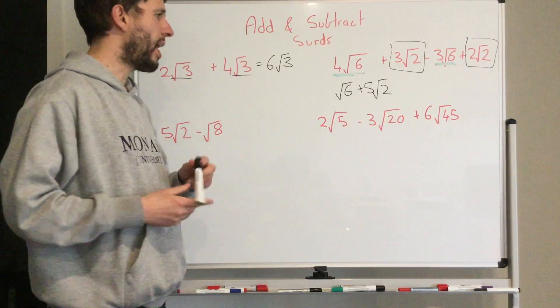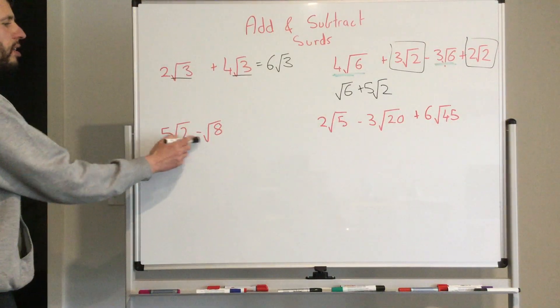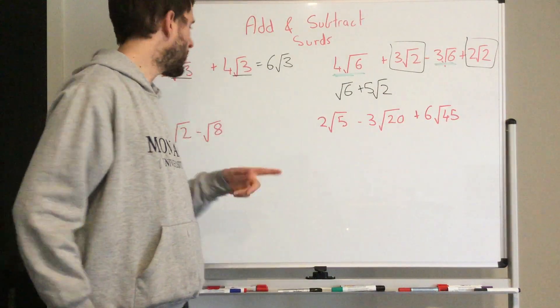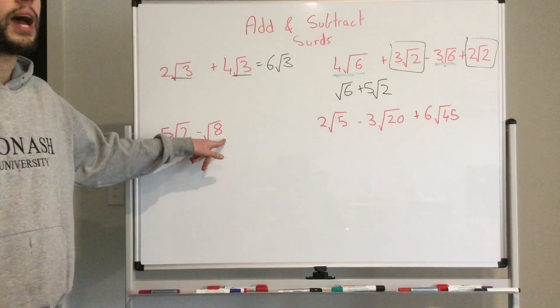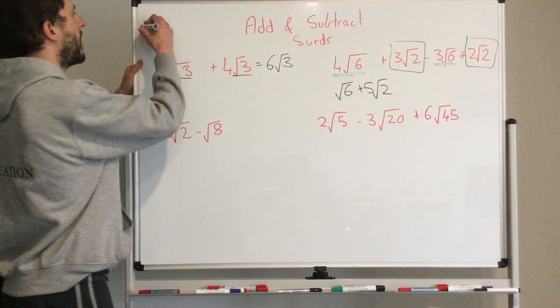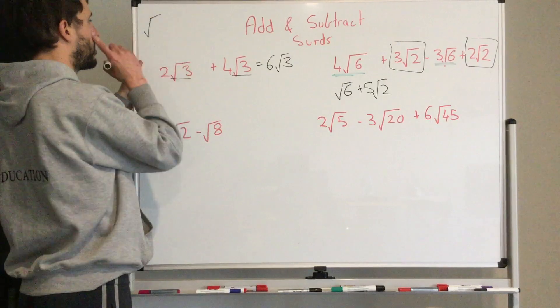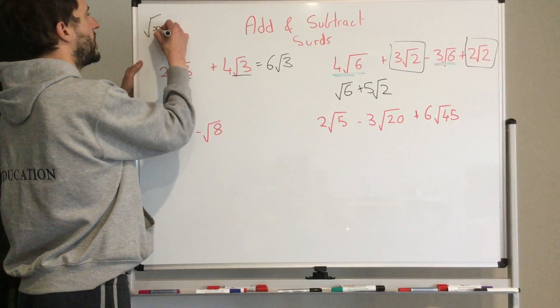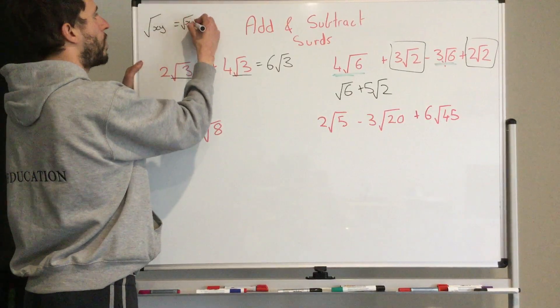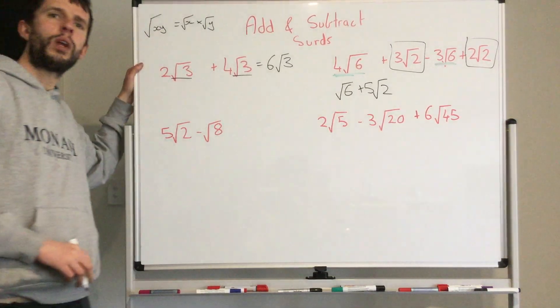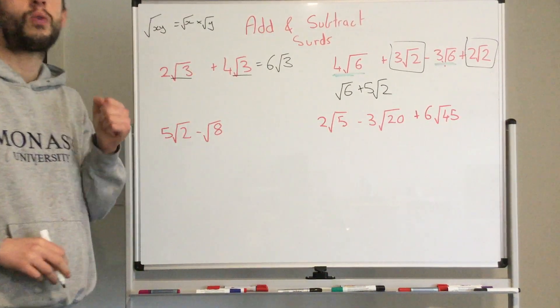Now, when they are different, we need to simplify and try and get it to be the same term. And that means thinking about this here, which is square root of 8. Using our rule, we can say the square root of x times y is the same as me doing square root of x times the square root of y.